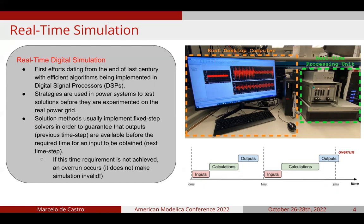This type of simulation is incredibly important in the study of power systems because it enables us to test solutions before they are actually implemented in the real world, in the real power system. Nowadays, real-time solutions usually implement fixed step solvers in order to guarantee that the reading of inputs, the execution of calculations, and the releasing of outputs is done within a time step interval. When this is not possible, we say that an overrun has occurred, and this does not mean that the simulation is invalid, but that that particular time step was not real-time compliant.